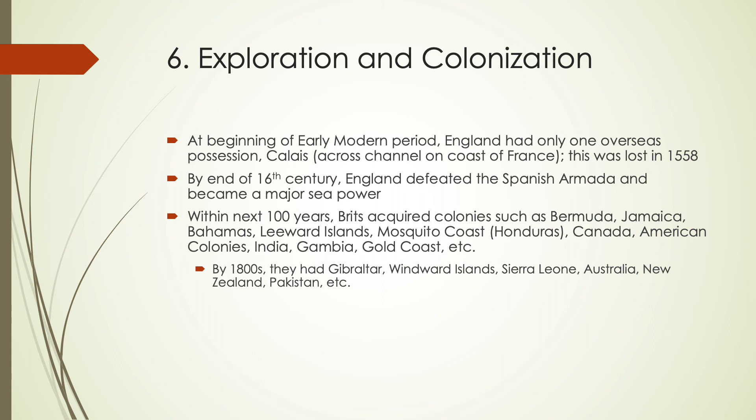Within the next 100 years, the Brits acquired many colonies throughout the world — places like Bermuda, Jamaica, the Bahamas, the Mosquito Coast (now known as Honduras), Canada, the American colonies, and India. By the 1800s, they also had areas like Gibraltar, Australia, New Zealand, and Pakistan. They had expanded around the globe by the 1800s.